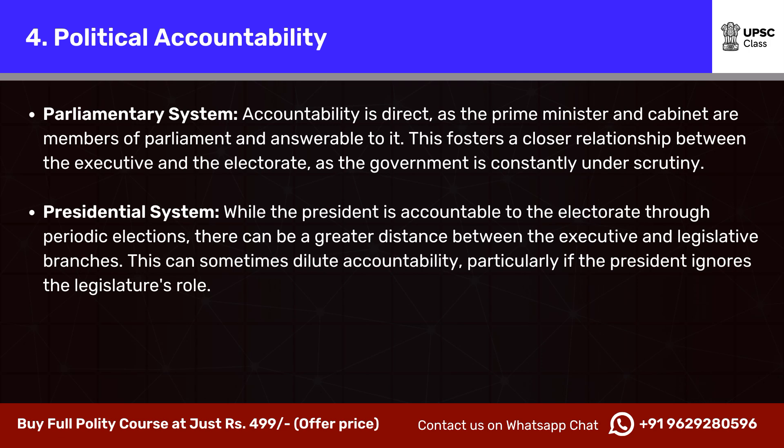Political Accountability. Parliamentary System: accountability is direct, as the prime minister and cabinet are members of parliament and answerable to it. This fosters a closer relationship between the executive and the electorate, as the government is constantly under scrutiny. Presidential System: while the president is accountable to the electorate through periodic elections, there can be a greater distance between the executive and legislative branches. This can sometimes dilute accountability, particularly if the president ignores the legislature's role.